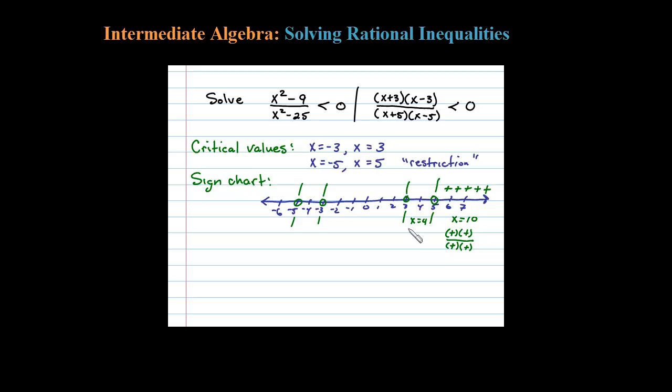So let's choose a number in this interval, say x equals 4 would be the easiest way to go. Substituting 4: 4 plus 3 is positive, 4 minus 3 is positive, divided by 4 plus 5 is positive, and then 4 minus 5 is negative. So when I multiply and divide here with one negative, the result's going to be negative.